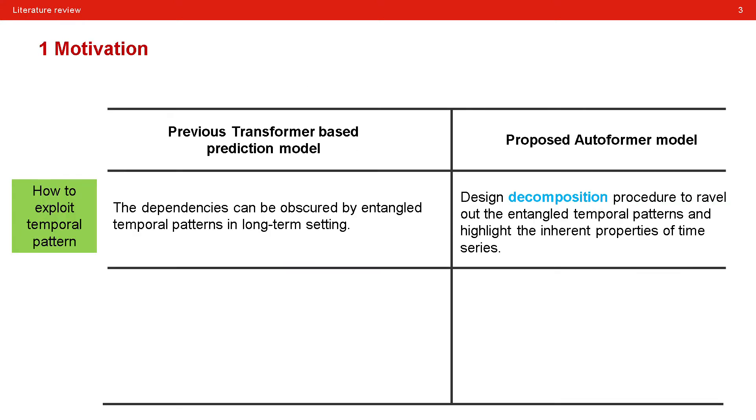Recently, the transformer model which shows superior performance on natural language process gains more attention in prediction tasks. It is mainly due to the reason that the self-attention scheme seals the necks of historical dependency identification. However, this study pointed out two major limitations in the previous transformer-based prediction model.